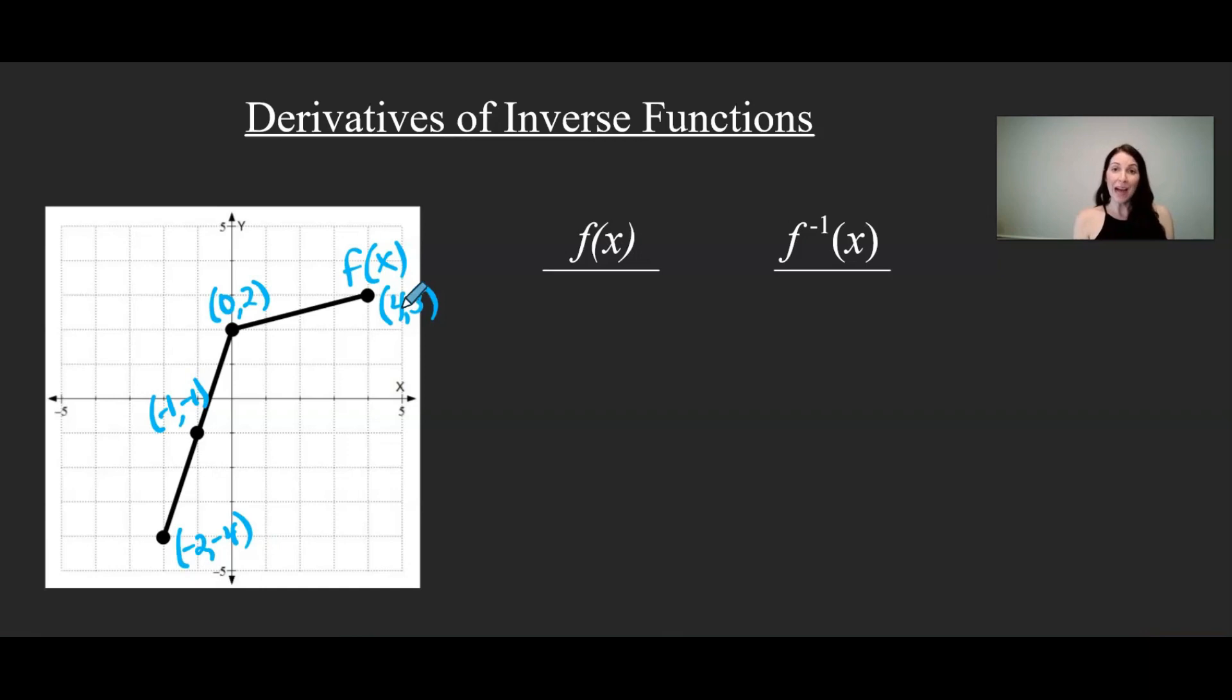So the point 4, 3 will change to 3, 4, right here. 0, 2, and let me go ahead and write that. Alright, the point 0, 2 will change to 2, 0.